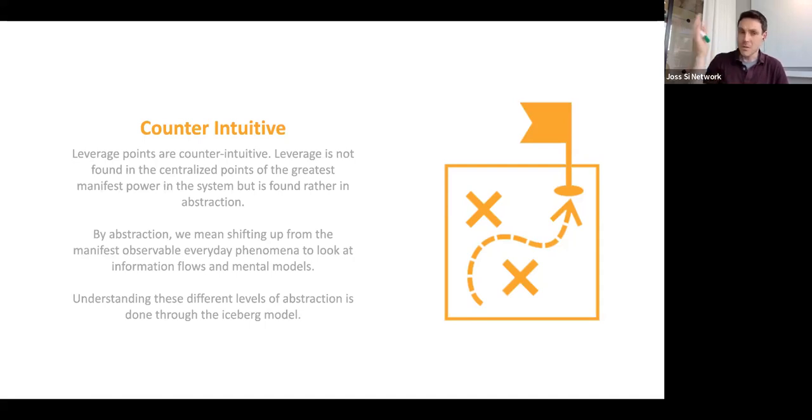We often think of those places—the politicians, the people at the top of hierarchies with a lot of resources, power—as the people who can affect change. We just need to talk to them and we'll be able to change this. Whereas leverage points is saying something very different. Actually, we need to shift. We need to recognize that that's all on one level. We'll talk about this when we talk about the iceberg model.